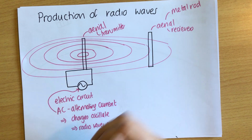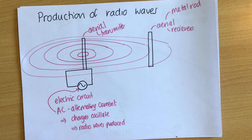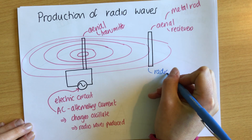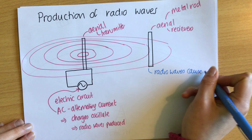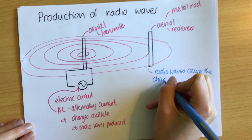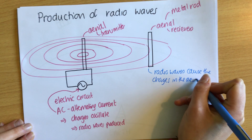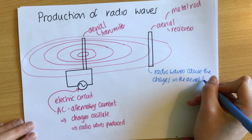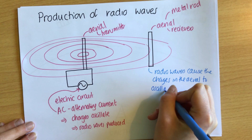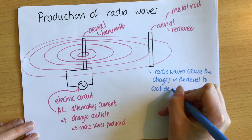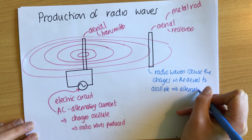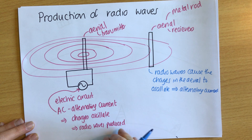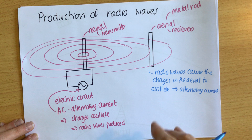The aerial at the receiver — just a metal rod — now has radio waves near it. Metal rods have lots of free, delocalised electrons. The radio waves cause the charges in the aerial to oscillate, or move backwards and forwards, which causes an alternating current. So on the transmitter side, an alternating current causes charges to oscillate which produces waves; on the receiver side, the radio waves cause the charges to oscillate which causes an oscillating current.